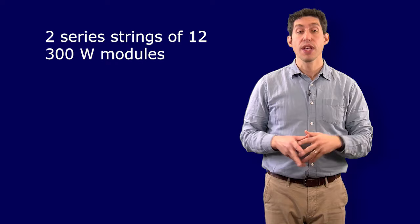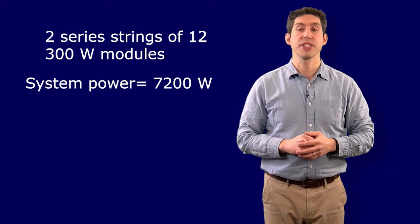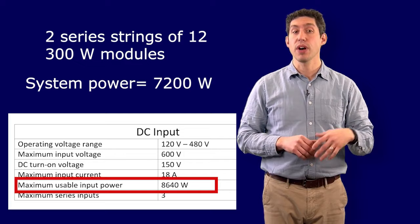In this case, it appears that the final design would include two strings of 12, 300 watt modules. The total system power is still calculated to be 7200 watts under standard test conditions. This is a little bit lower than the maximum usable input power of the inverter of 8640 watts.